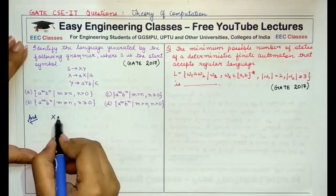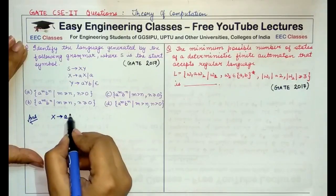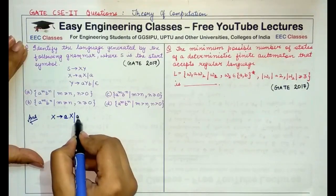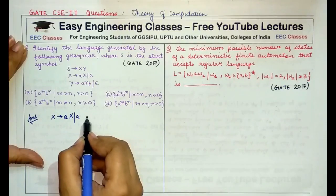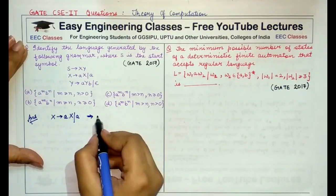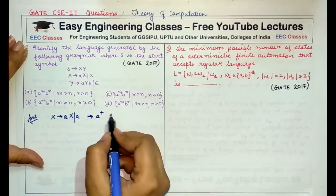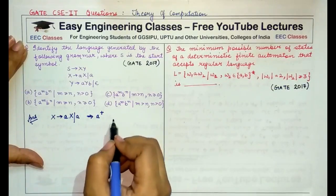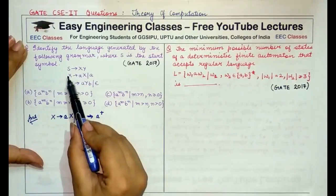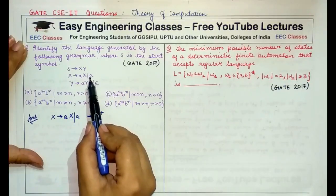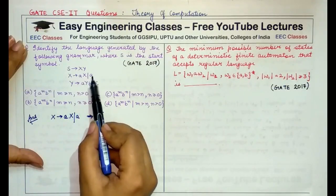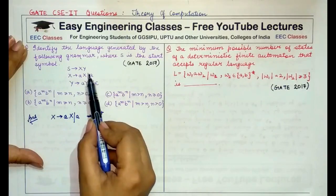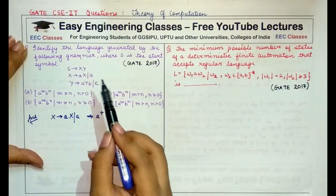Now X says that X can be replaced by AX or A, which means X basically is representing A plus, a single A or more than one A. Because either X would be replaced by a single A or a single A followed by more number of X. And more number of X means more number of A.